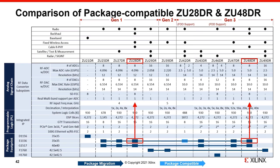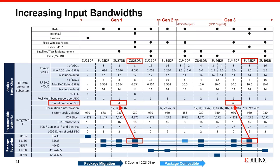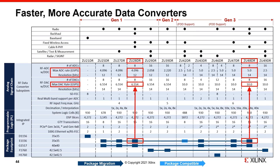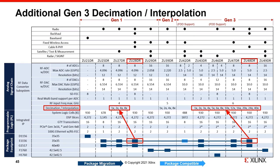Using the package-compatible Gen 1 ZU28DR and Gen 3 ZU48DR as an example, we can compare performance improvements. The RF-ADC input buffer bandwidth has increased to 6 GHz in Gen 3, the RF-ADC sampling rates have increased to 5 gigasamples per second at 14-bit resolution, and the RF-DAC sampling rates have increased to 10 gigasamples per second. We also now have many more decimation and interpolation options supported by the DDCs and DUCs of the RF converter tiles.